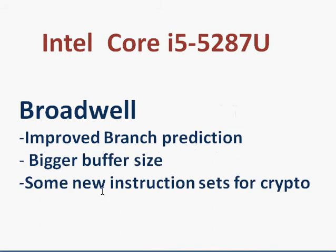Broadwell also has a slight improvement in branch prediction, and also has a bigger buffer size. These two things improve processor performance for a given clock. So there are both things going on in Broadwell: manufacturing process improvement as well as slight improvement in processor architecture. But Broadwell is basically a process improvement in the Tick-Tock process.